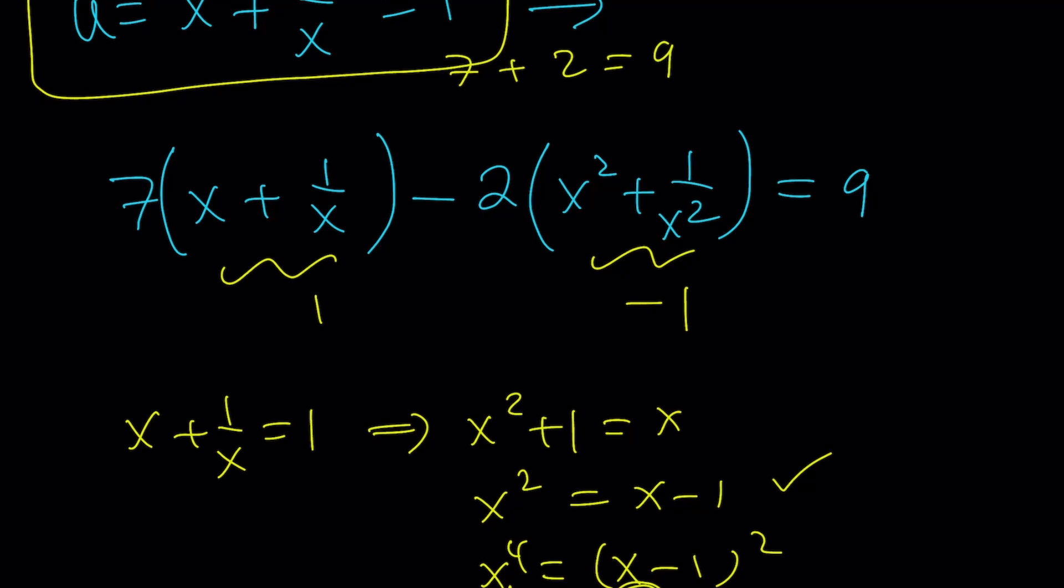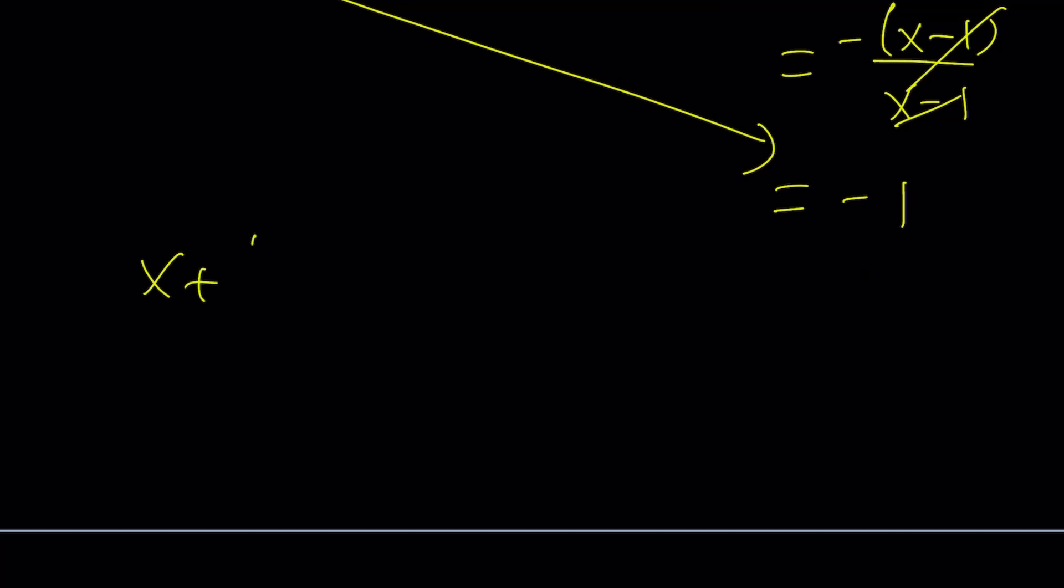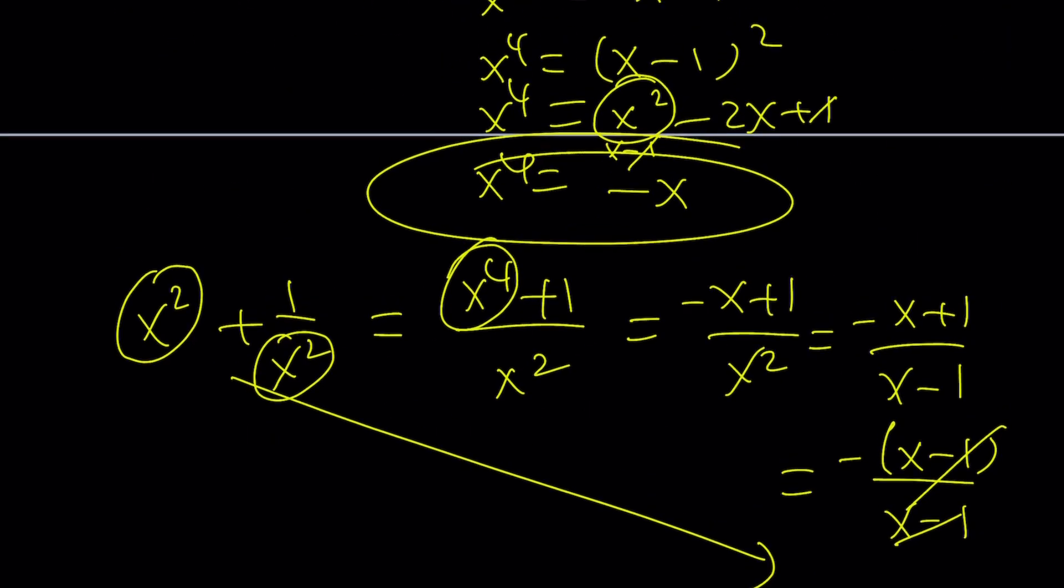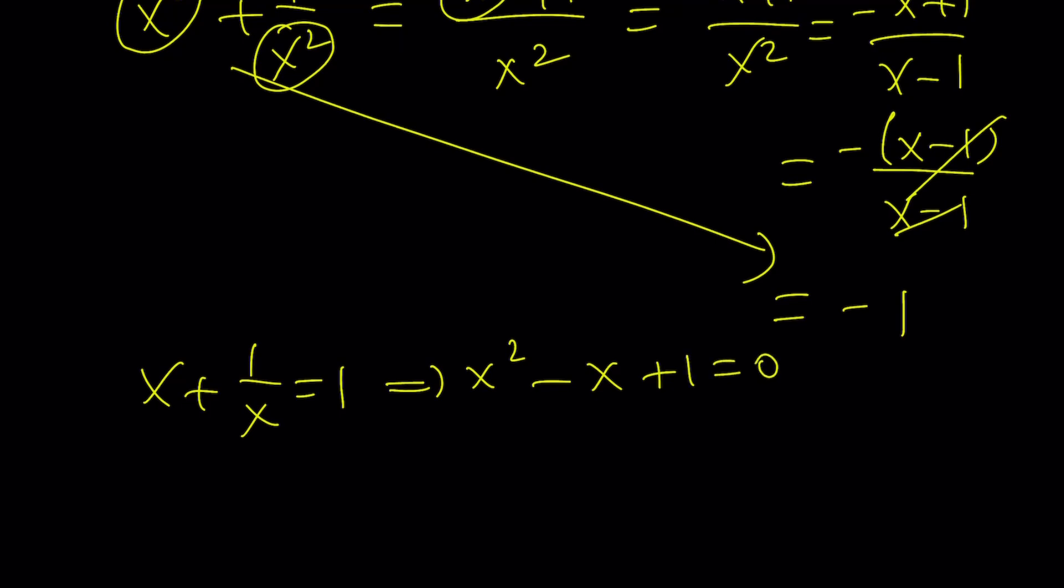But what are the solutions? This doesn't give me the solutions. Well, if you solve this quadratic, you're going to get the solutions. So from here, we got this interesting equation, which doesn't have any real solutions, but it has complex solutions. Negative b plus minus the square root of b squared, 1 minus 4, negative 3 over 2. And that's going to be 1 plus minus root 3i over 2. And guess what? These are complex cube roots of negative 1.